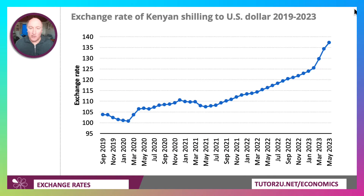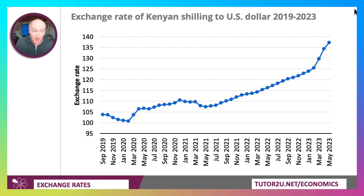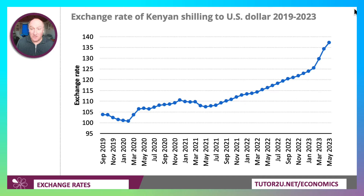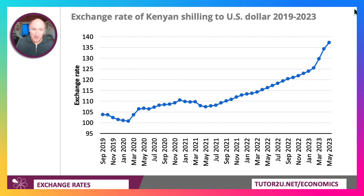The example I'm choosing today is the Kenyan shilling against the US dollar. You can see here that from 2019 through to 2023, whereas it would have taken 105 shilling to buy a US dollar in September 2019, you can see it now takes 135, nearly 140 Kenyan shilling to buy a US dollar. In other words, the value of the Kenyan currency has depreciated against the US dollar.